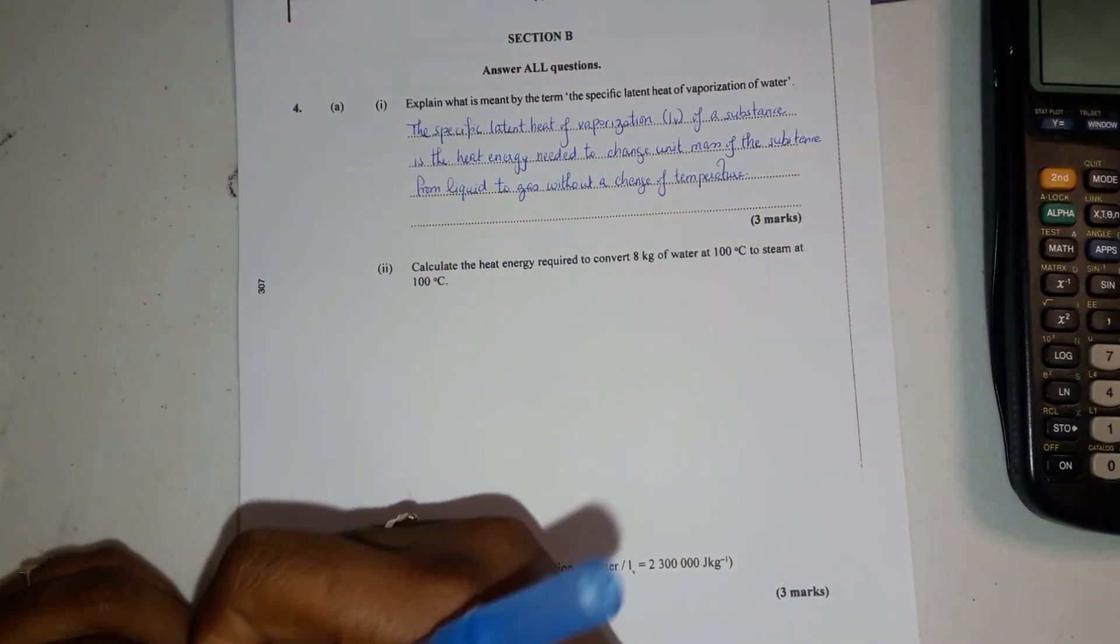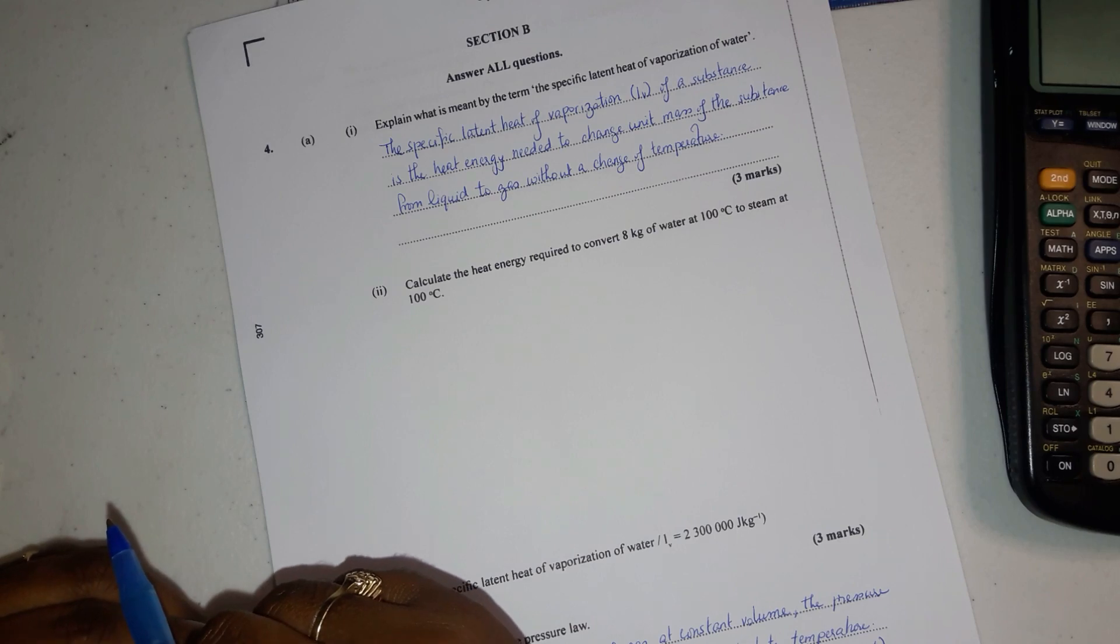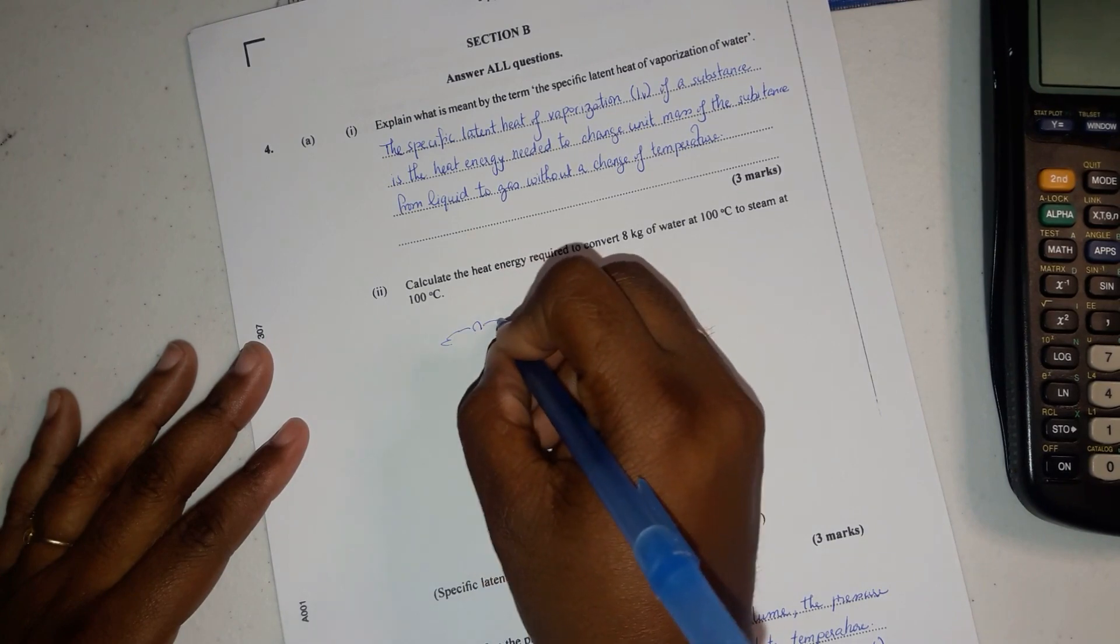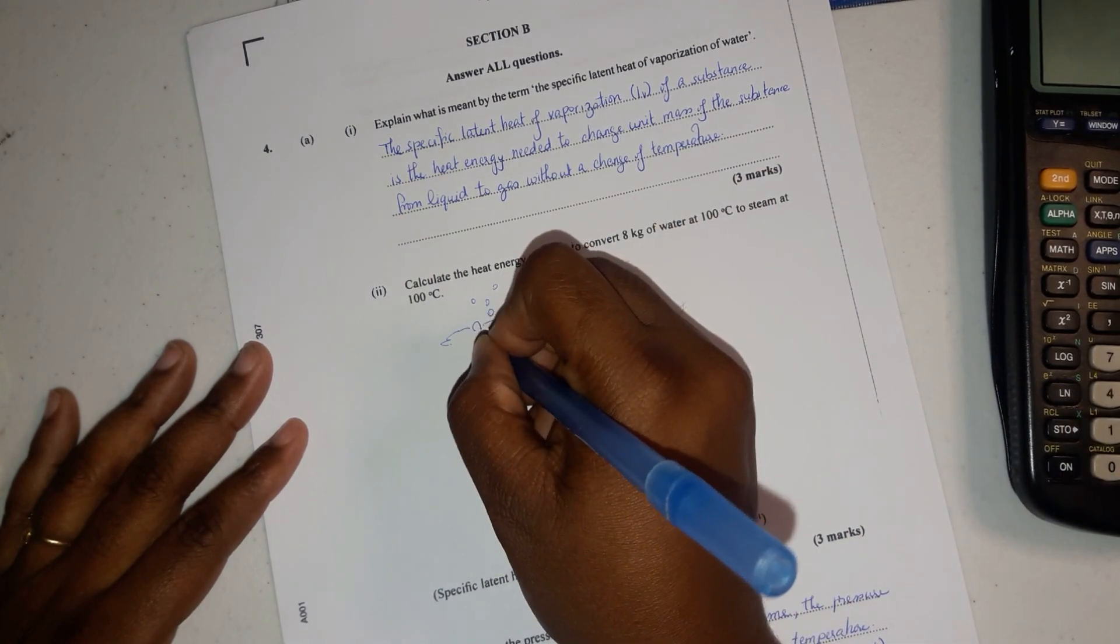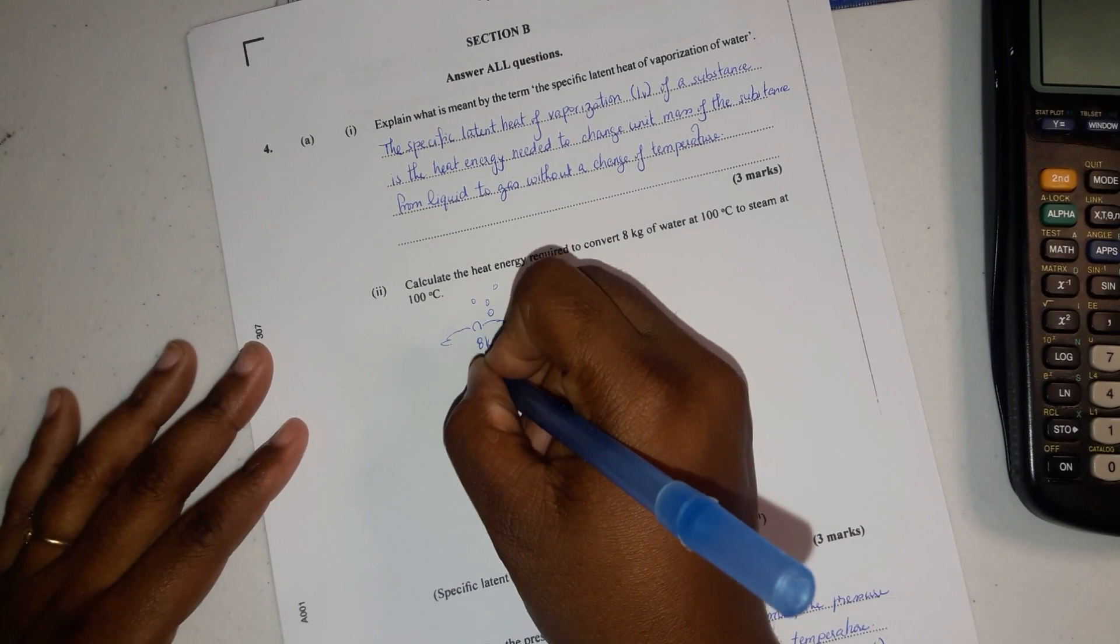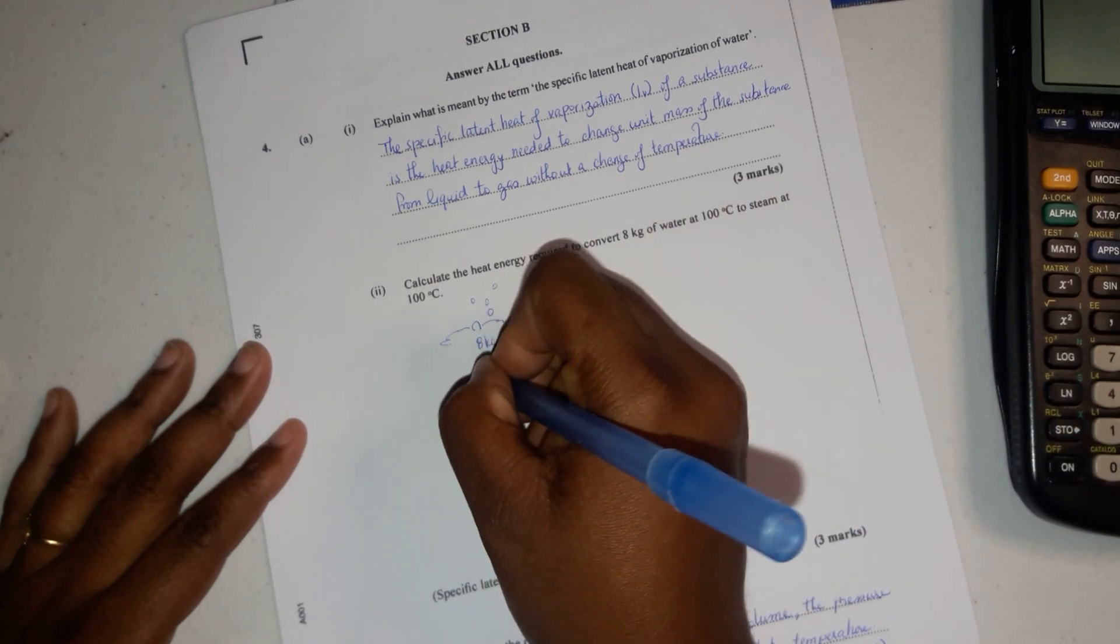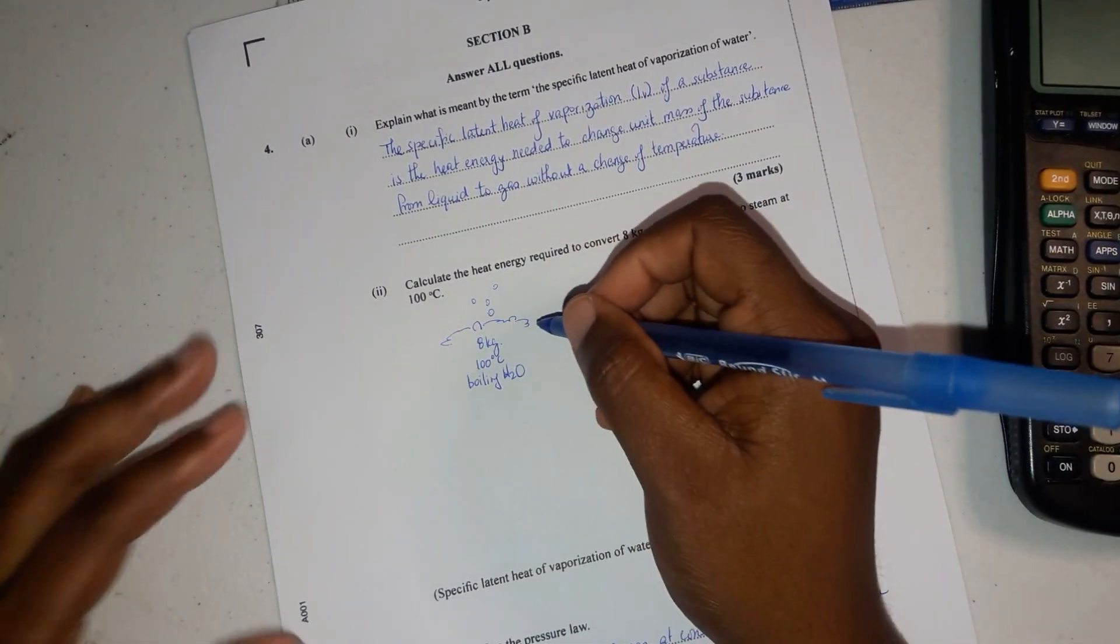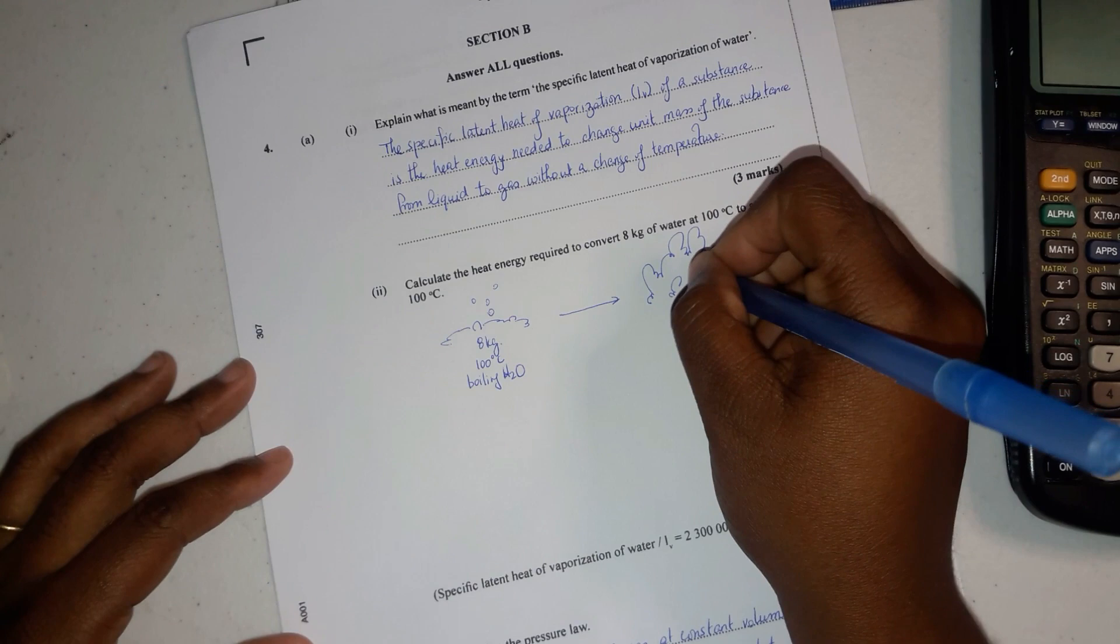Now it says calculate the heat energy required to convert 8 kilograms of water at 100 degrees Celsius to steam at 100 degrees Celsius. I usually tell my kids start by drawing. So this is the water, this is boiling hot water, this is the mass, this is the temperature. This is boiling water and this is steam. We're going from boiling water, doing a phase change to steam. So I can put the notation underneath: 8 kilograms, 100 degrees Celsius, and we have steam.